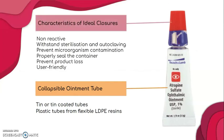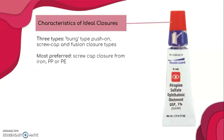The ideal closure should be able to properly seal the container and prevent product loss. They should also be non-reactive and user-friendly so that they can be easily removed and replaced after use. There are many closure types suitable for eye ointment, namely the bung type push-on, screw cap, as well as the fusion closure type. However, screw cap closure seems to be more preferred because it is easy to use. As for the material, tin is suitable for both the screw cap and to fabricate the tubes. Apart from tin, polyethylene and polypropylene are also suitable materials for the screw cap.